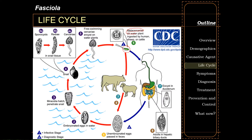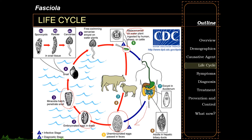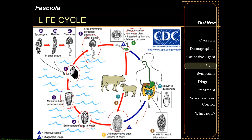These eggs eventually reach the stools. When released into the outside environment, the unembryonated egg will embryonate in fresh water — a process that takes around nine to fifteen days. The embryonated egg hatches to release the miracidium, which looks for its first intermediate host, the typical pond snail, where it undergoes several stages: sporocyst, redia, and cercaria — taking a few weeks. The cercaria is then released and seeks its second intermediate host, the water plants, where it encysts into a metacercaria, completing the life cycle.